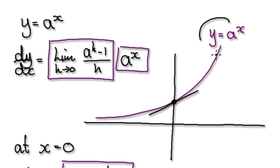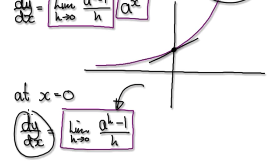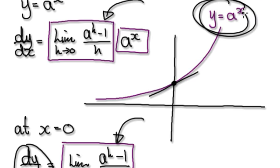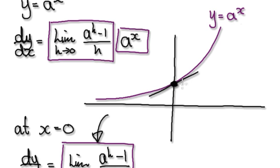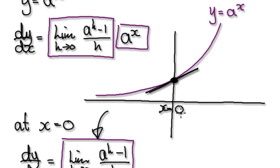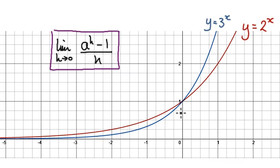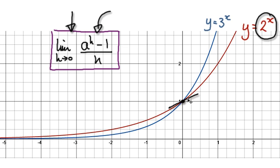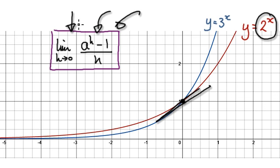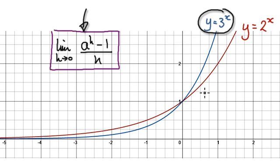What that means on this graph is that for y equals a to the power of x, this block here really means the gradient at x equals 0. So on the graph, this block is the gradient at x equals 0. Let me give you some more examples. In the case of 2 to the power of x, this block means the gradient of the red line at x equals 0. And for the blue line, this block is the gradient at x equals 0.